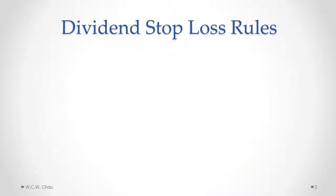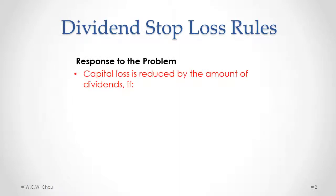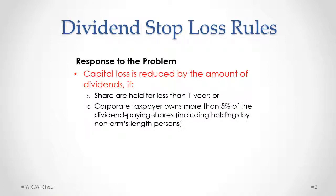The federal government's response to that problem was to create the dividend stop-loss rules. What those rules do is reduce that capital loss by the amount of the dividends. That rule applies if one of two conditions is present: first, the shares are held for less than one year; or second, the corporate taxpayer — in our example, CanCorp 1 — owns more than 5% of the dividend-paying shares of the other corporation.